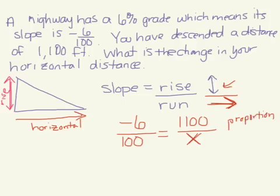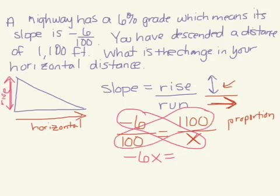The way that we solve proportions is we cross multiply. We're going to multiply on these diagonals, so we take negative 6 and multiply by x, and we multiply our other diagonal, 1100 by 100.